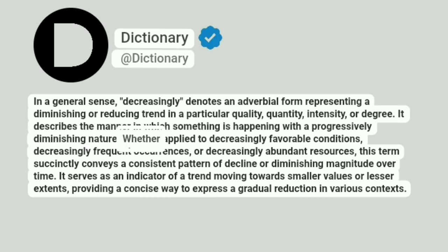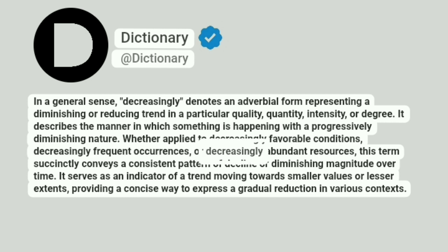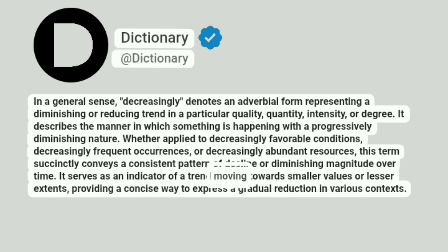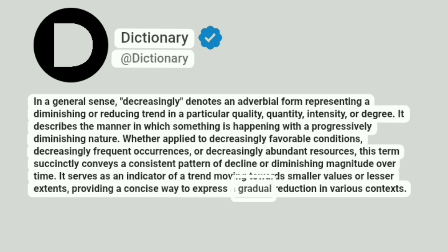Whether applied to decreasingly favorable conditions, decreasingly frequent occurrences, or decreasingly abundant resources, this term succinctly conveys a consistent pattern of decline or diminishing magnitude over time. It serves as an indicator of a trend moving towards smaller values or lesser extents, providing a concise way to express a gradual reduction in various contexts.